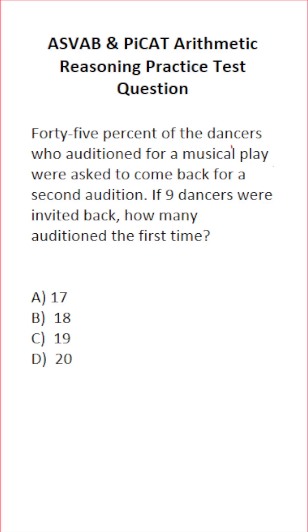So we need to translate these statements into an equation that we can then solve. Let's start with this. Nine dancers were invited back, and that's equal to 45% of the total dancers. So 45% as a decimal is 0.45. Of in math is multiply. And the total number of dancers who auditioned is unknown, so we'll call that X.